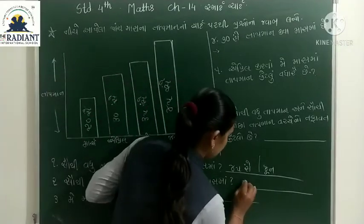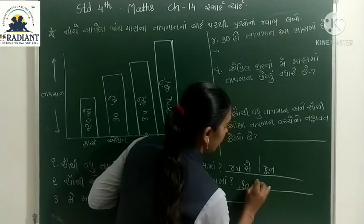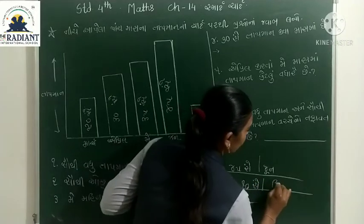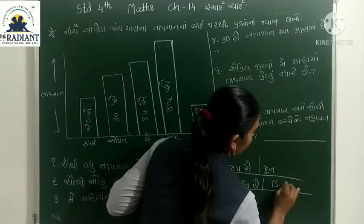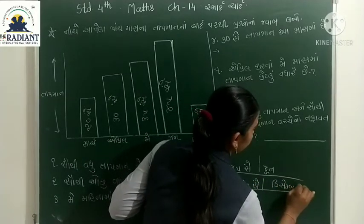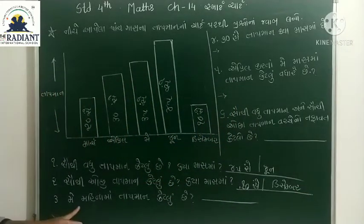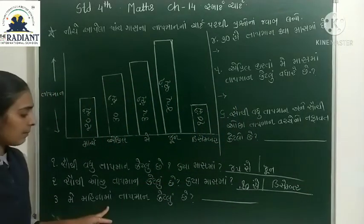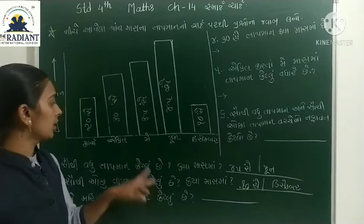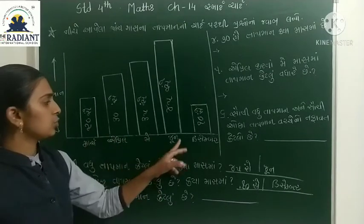ડિસેમ્બર મહિનામાં તાપમાન 10 સેલ્સિયસ છે. ત્રીજો સવાલ - ક્યા ક્યા મહિના છે? માર્ચ, એપ્રિલ, મે, જૂન, ડિસેમ્બર - આ બધા મહિના.